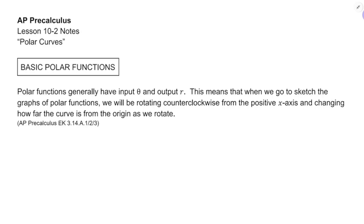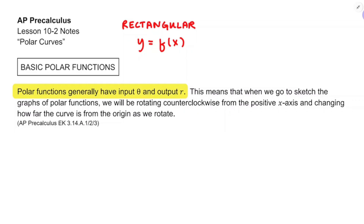Polar functions generally have input theta and output r. That's going to be really important for us. We're used to a rectangular world where y is the output and x is the input, and we say y equals f of x. Now in the polar world, the input is theta and the output is r, so we graph r equals some function of theta.